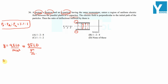So the deflection y is proportional to the charge of the particle times the mass of the particle, divided by the square of momentum. Since electric field E, L, and D are the same for all three particles — proton, deuteron, and alpha particle — they cancel out in the ratio.